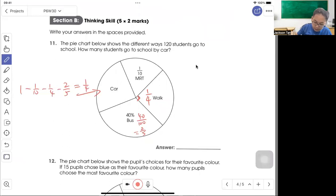1 quarter. So now 120 students, 1 quarter times 120, that's 30 students. Answer is 30.